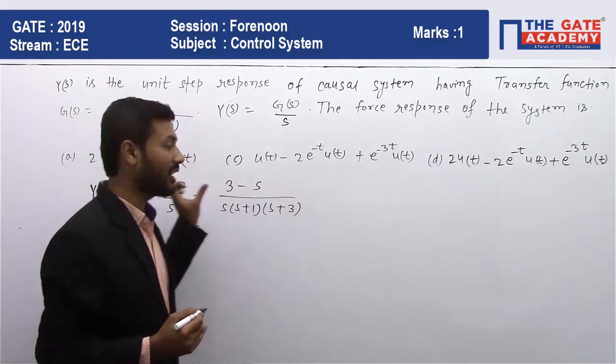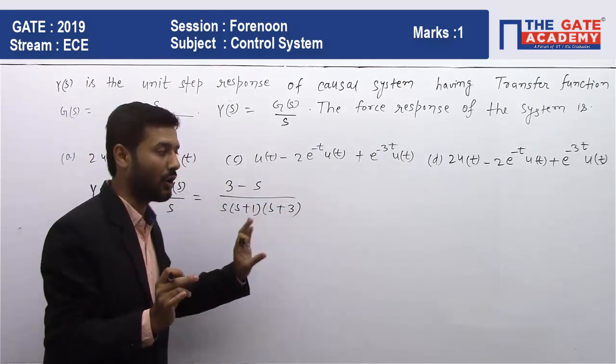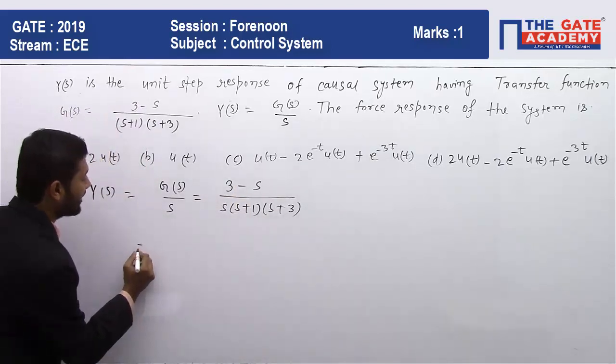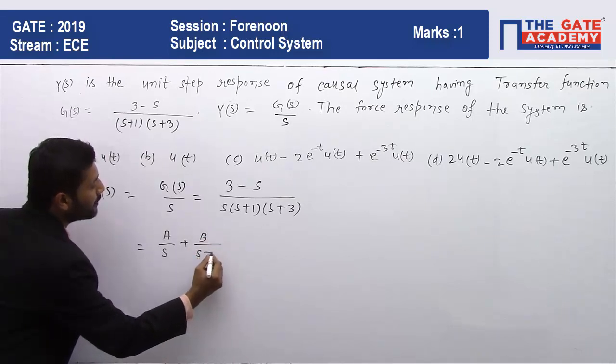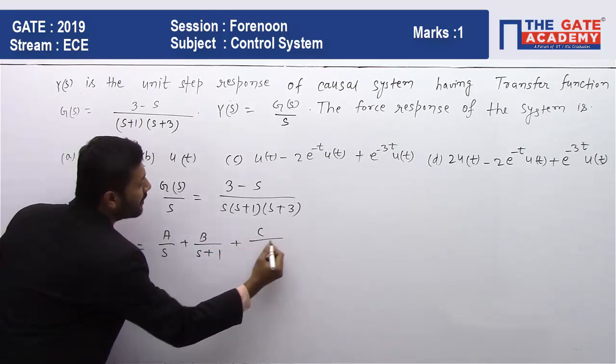We can write this transfer function in partial fraction form, so I am writing this as A/s + B/(s+1) + C/(s+3).